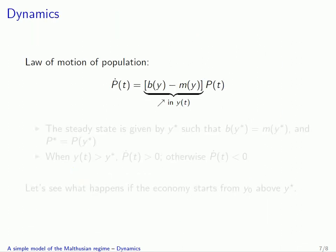Now that we know how to compute the steady state graphically, the last thing we need to do is prove that the whole economy will converge to that steady state starting from any initial situation. In order to do this, we need to use the law of motion for population. As we are in continuous time, this law of motion is an expression of ṗ(t), the time derivative of population. So ṗ(t) equals p(t) times the birth rate minus the mortality rate — an expression for the number of births minus the number of deaths that occur at any point in time.